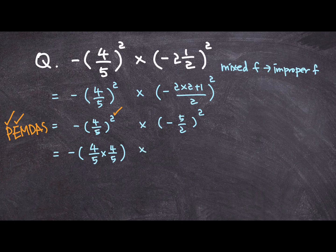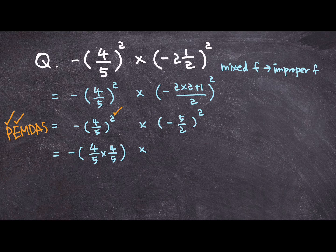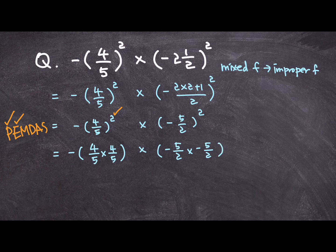And then the second fraction. This time, I am squaring this whole fraction with negative sign. So, what I end up with is negative 5 over 2 times negative 5 over 2.